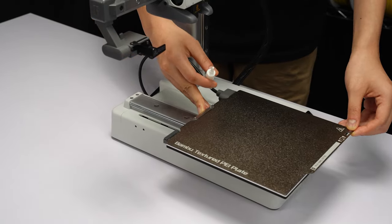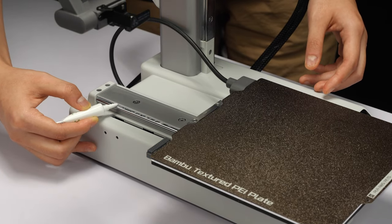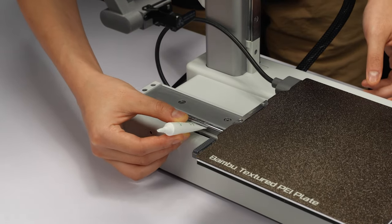Move the heat bed back and forth to evenly distribute the lubricant oil. Following the same method, apply lubricant oil to the remaining sections of the steel shaft.